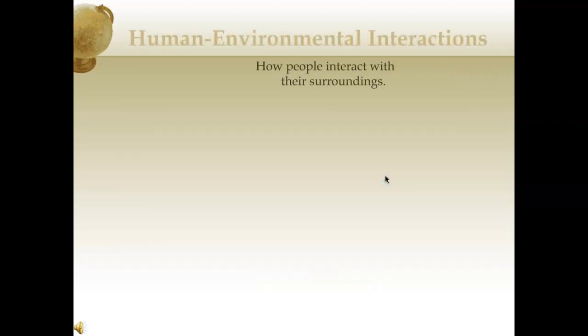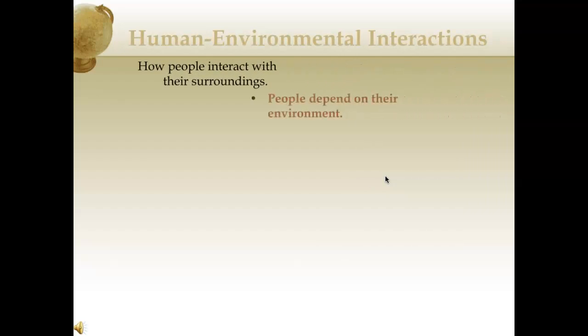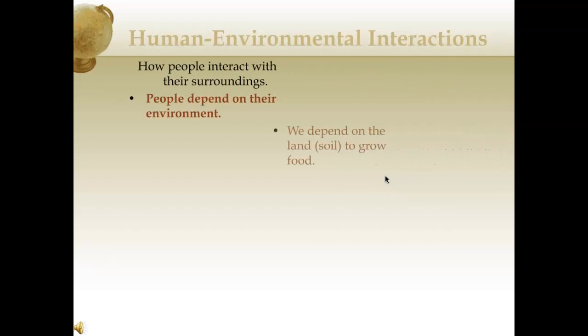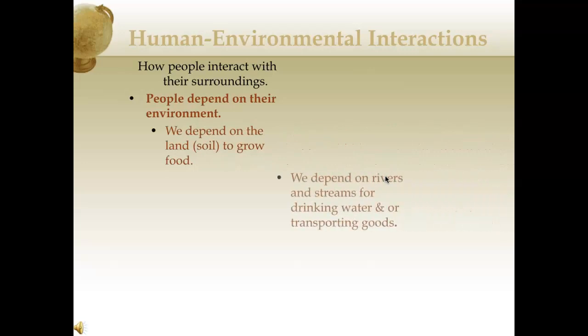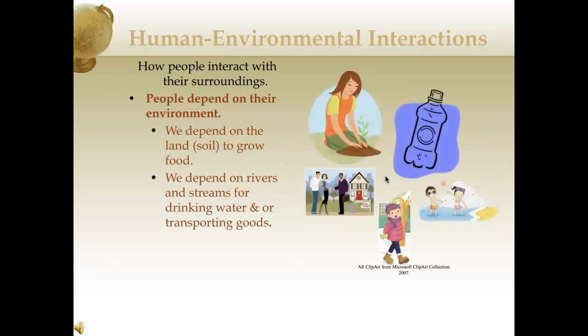Now let's move on to human environmental interaction. This is the study of how people interact with their surroundings. People depend on their environment — for example, we depend on the land and soil to grow food, and we depend on rivers and streams for drinking water or transporting goods. Ever since the dawn of mankind, we've been interacting with the environment. But do you ever stop and think that the environment has always been interacting with us in ways more than we ever could imagine?